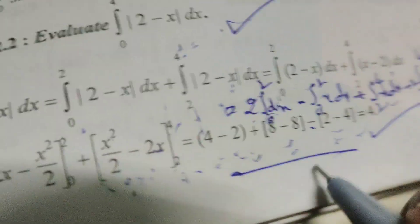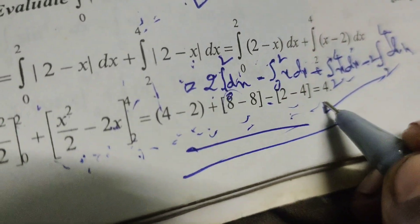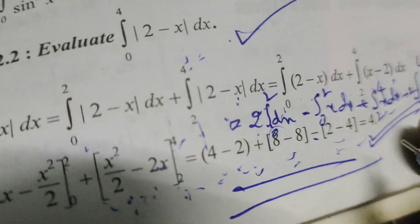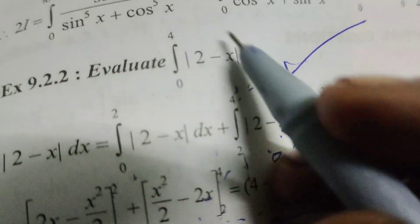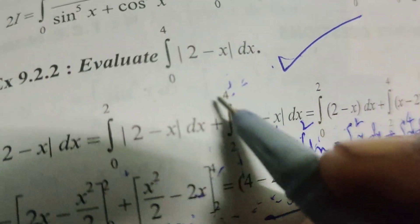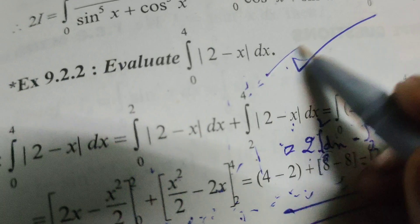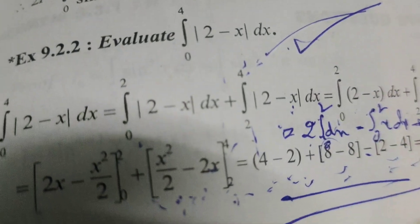This is the solution. 4 is the answer to this definite integral problem: integral from 0 to 4 of |2 - x| dx. Thank you.